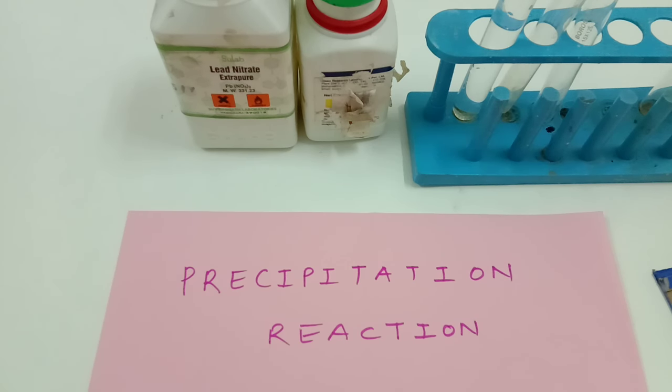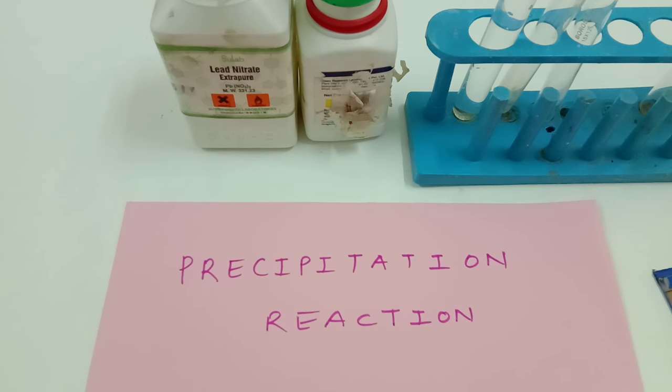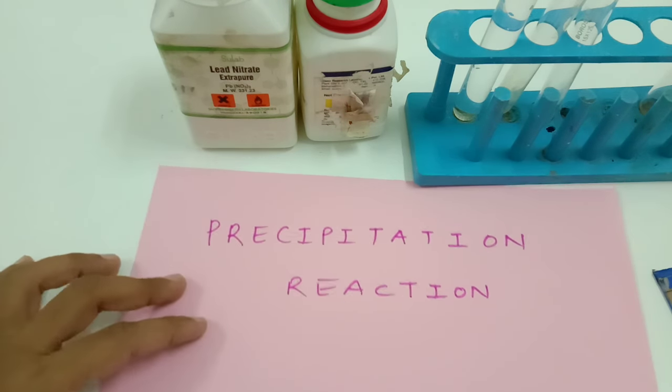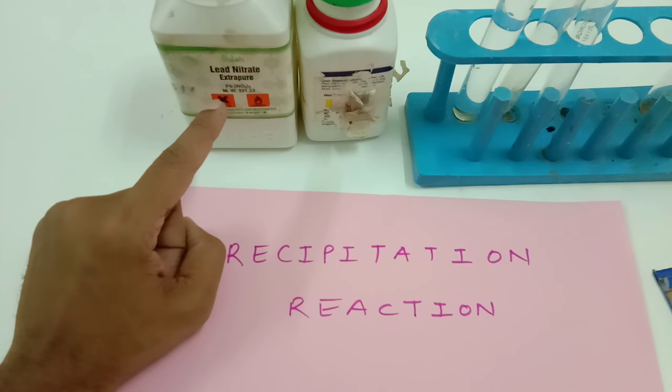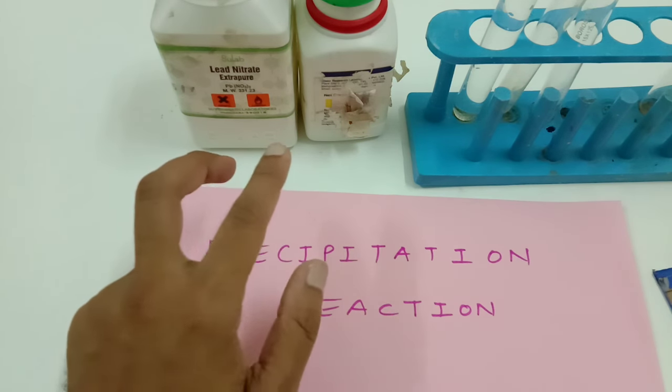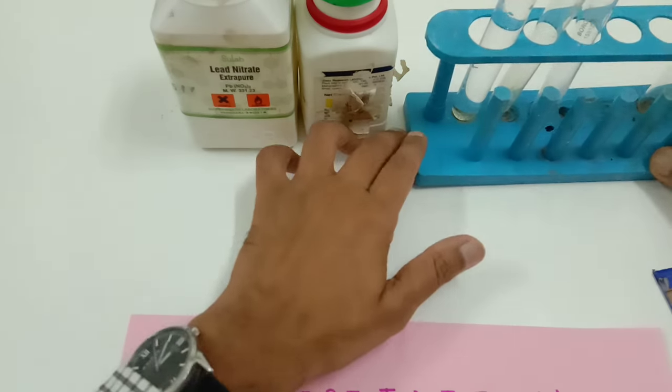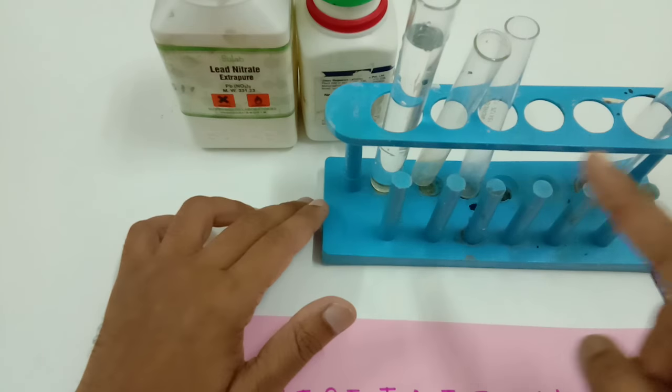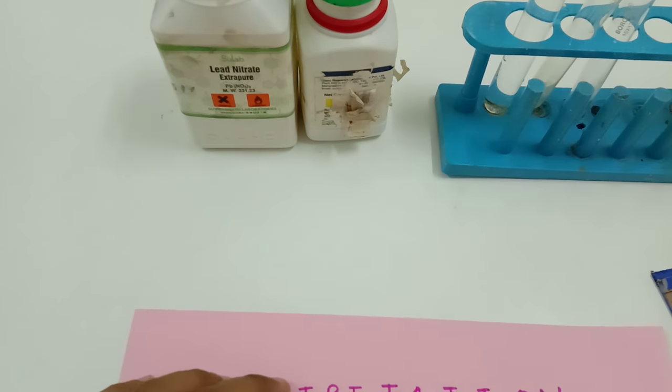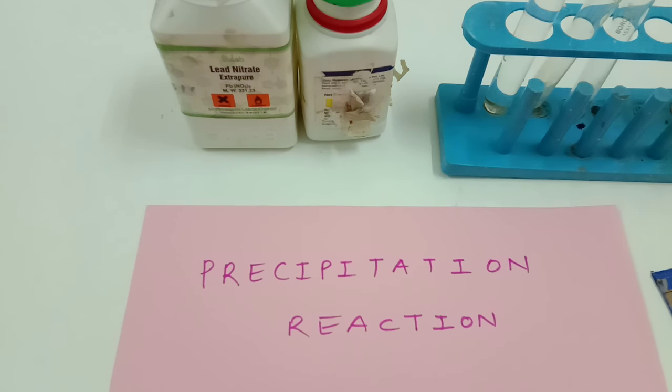Hello scientific people, how are you today? Today I am going to demonstrate a precipitation reaction between lead nitrate Pb(NO3)2 and potassium iodide. Both of them are white colored salts. What else do we require? We require a few test tubes and some water. So let's begin the experiment and then we are going to go inside the details of the reaction.